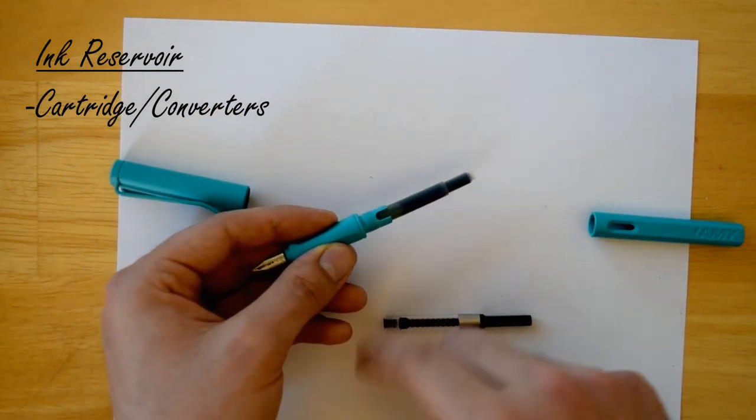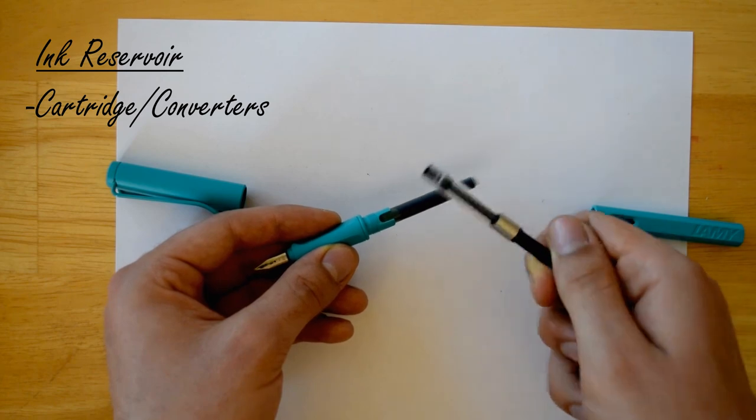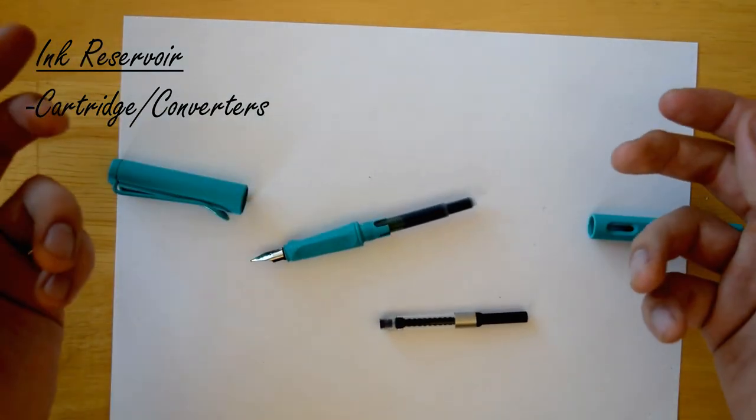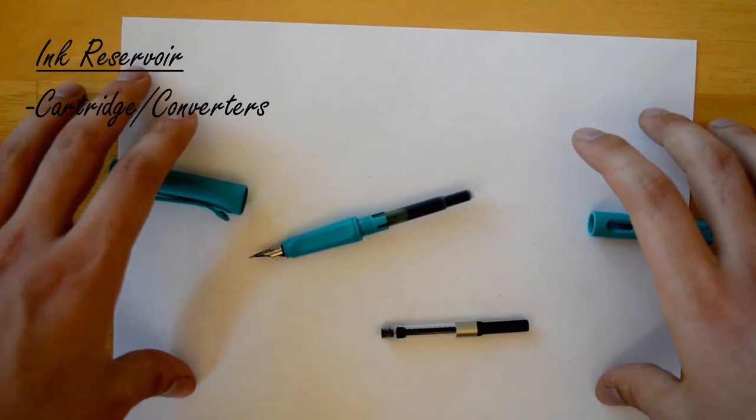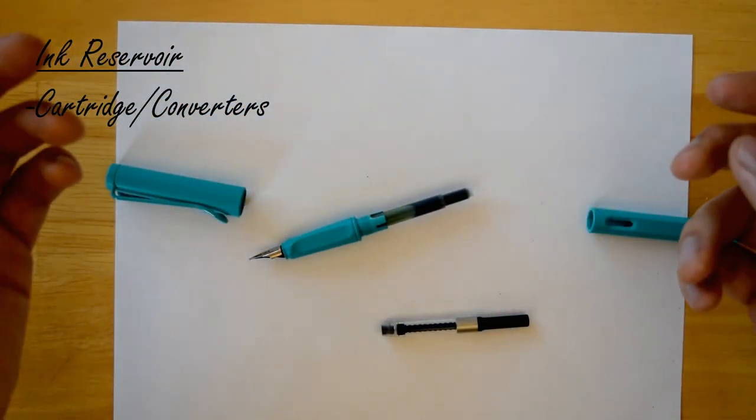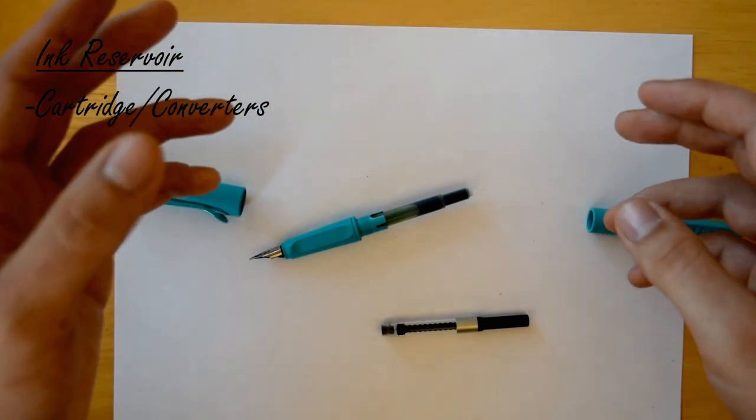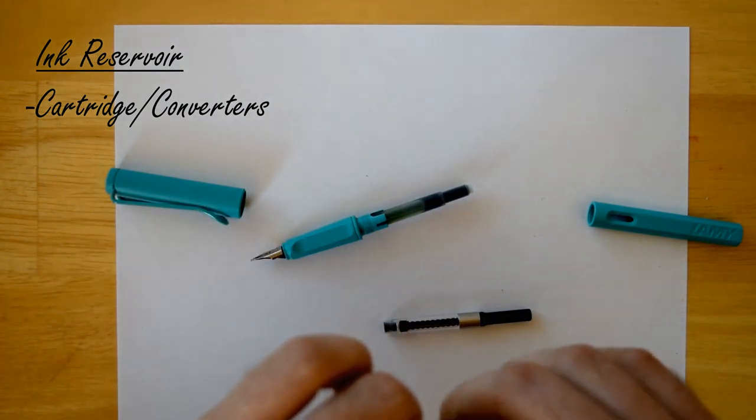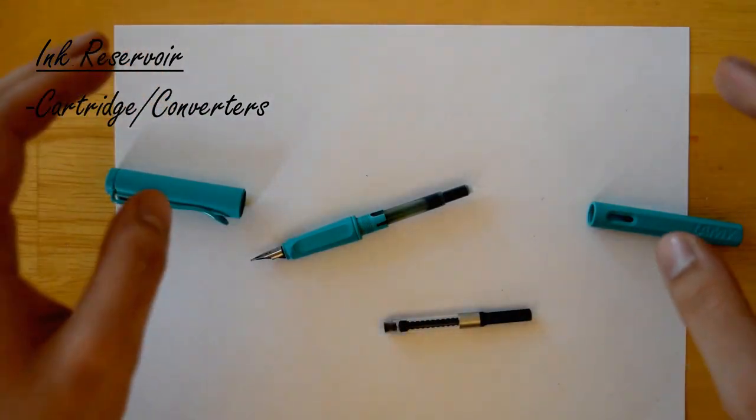Every brand that allows for cartridges and converters has their own shape. For example, this is a Lamy Safari, so it uses a Lamy T10 cartridge, and then you have this converter that only works with Lamy. Different pen brands that have cartridges have their own ink cartridge, except for a couple of brands that use international cartridges - international short and long - and these work in a wide variety of pens.